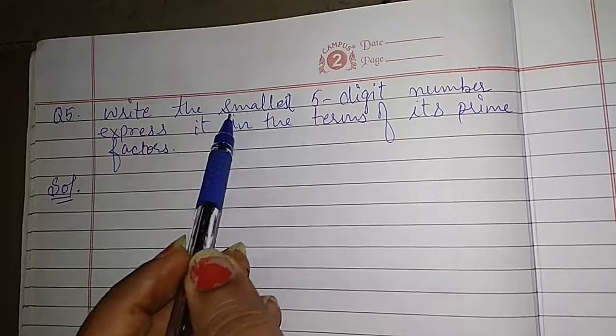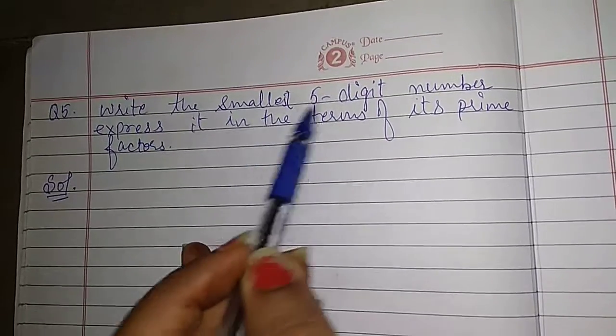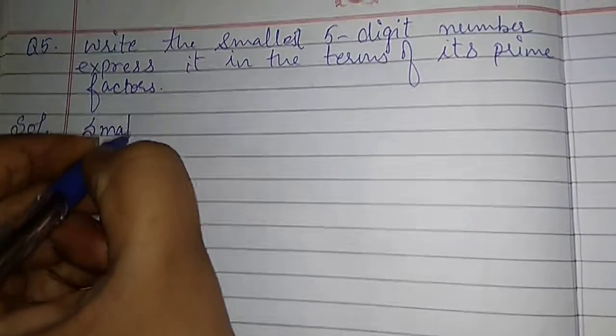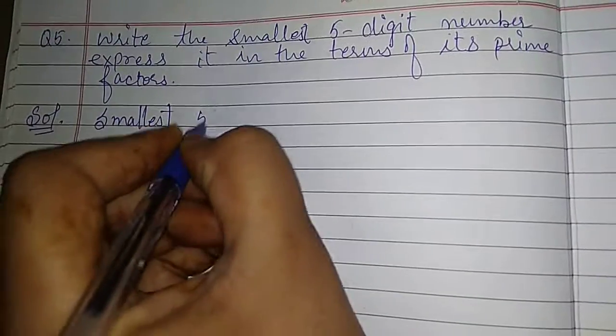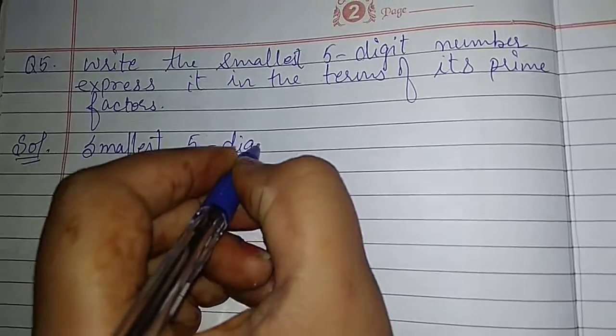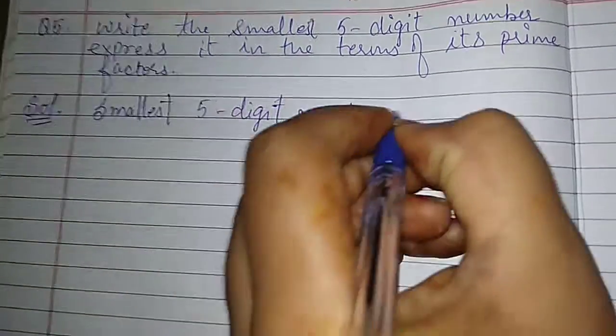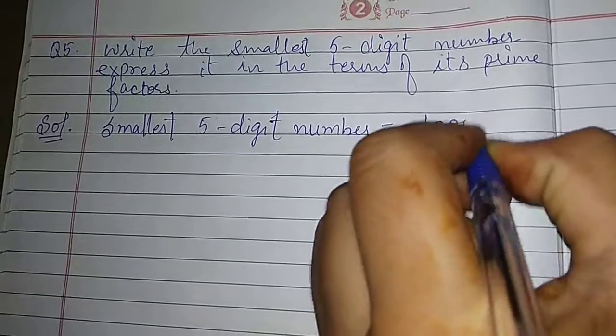Here the only difference is smallest 5-digit number. First we write the smallest 5-digit number: 1 along with 4 zeros.